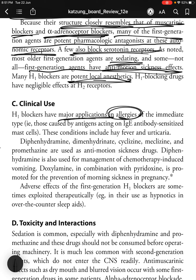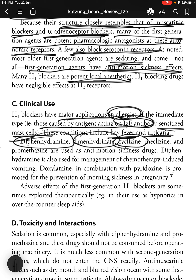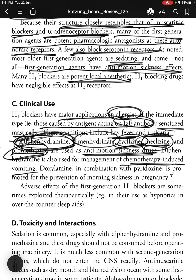H1 blockers have major applications in allergies of the immediate type — those caused by antigens acting on IgE antibody-sensitized mast cells — including hay fever and urticaria. Diphenhydramine, dimenhydrinate, cyclizine, meclizine, and promethazine are used as anti-motion sickness drugs. Diphenhydramine is also used for management of chemotherapy-induced vomiting. Doxylamine combined with pyridoxine is promoted for prevention of morning sickness in pregnancy. Adverse effects of first-generation H1 blockers are sometimes exploited therapeutically, such as their use as hypnotics in over-the-counter sleep aids.